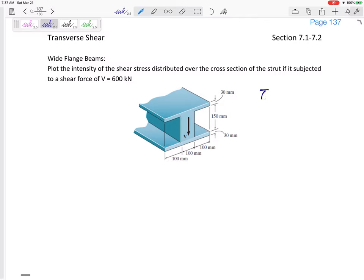So we know that tau is VQ over IT, but at different locations the Q and the T are different.